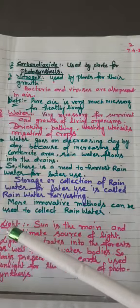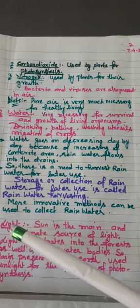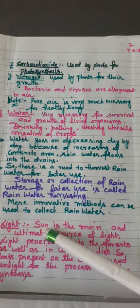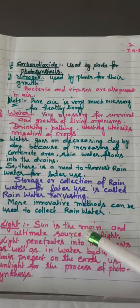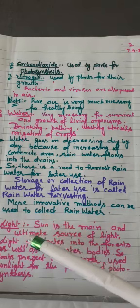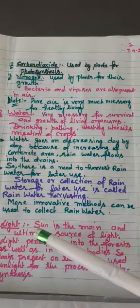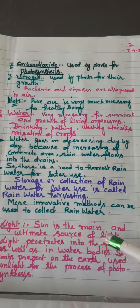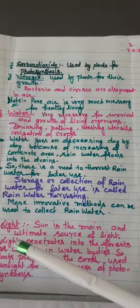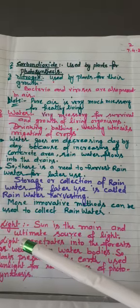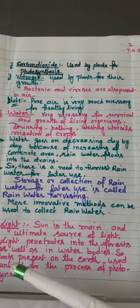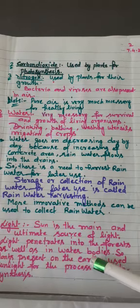Light. Light is coming from outside. What is the source of that? Sun is the source. It means, can you say that sun is the main and ultimate source of light? Ultimate means having no answer of it, no alternate of it. Sun is the ultimate source of light for all the living organisms present on the earth. This sunlight has the ability to penetrate into the forest